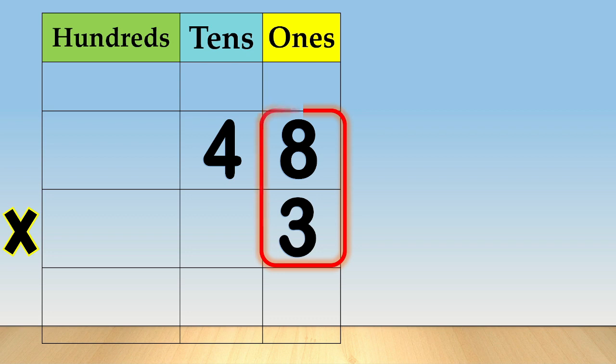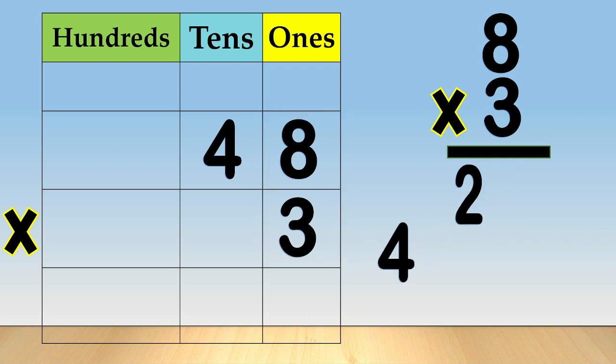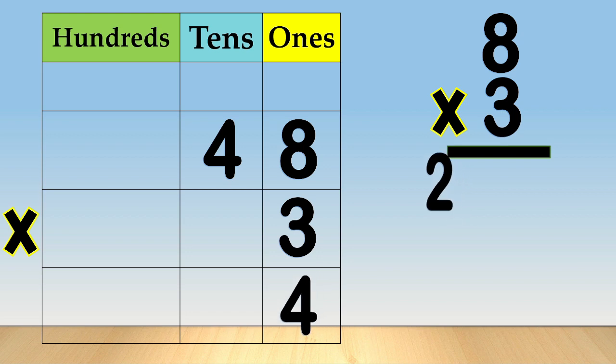So, eight times three is equal to twenty-four. Now, we need to regroup twenty-four ones as two tens plus four ones. We write four in the ones column.